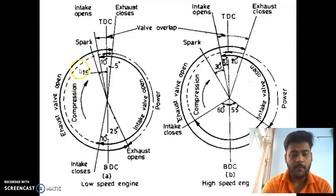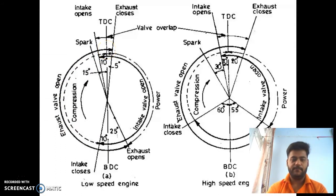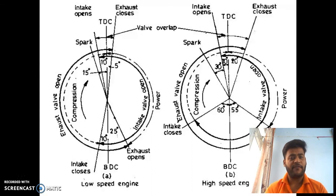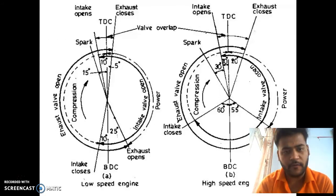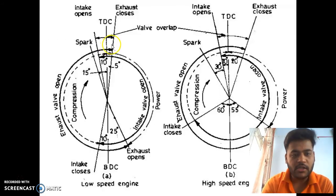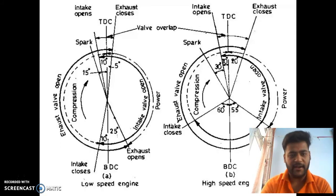The exhaust valve is closed after TDC because we want the maximum amount of exhaust gases to be expelled out of the cylinder. The exhaust valve is closed 5 to 10 degrees after TDC in low speed engines and about 25 to 30 degrees in high speed engines.